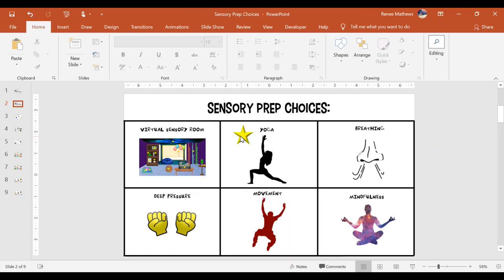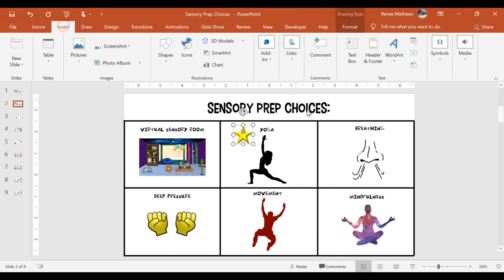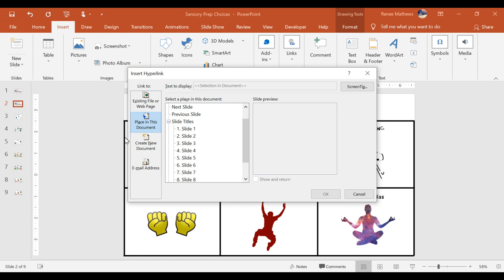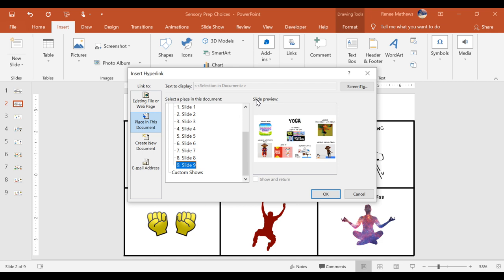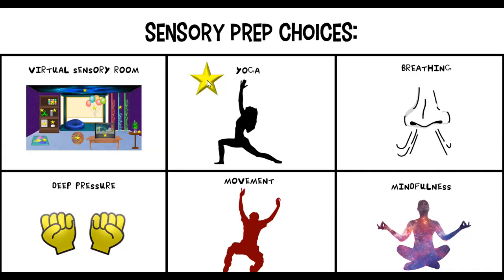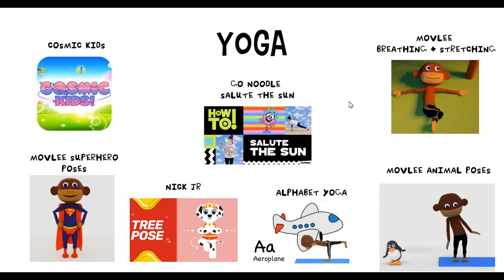To insert a link, click on that shape again, click Insert, click Links, click Add a Hyperlink, and it will open up the Insert Hyperlink box. Over on the left you'll see the option "Place in This Document" — that's the one you want to click. Since my yoga choices are on slide nine, I'm going to click slide nine and that adds a link to that slide in my PowerPoint. Then click OK. Let's check it out — click Slideshow mode, click on that star, and it brings me to the yoga slide.